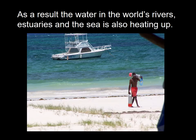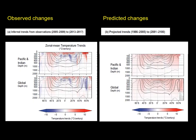As a result of increasing air temperatures, the water in the world's rivers, estuaries and sea is also heating up. These figures show observed changes in sea temperature for the Pacific and Indian Ocean and also globally. Looking from the surface to 2000 meters, there's been warming of sea temperatures, though this is not uniform and there are areas where the ocean is cooling. Projecting these trends into the future for 2100, there are no more areas of cooling and there is only warming observed.